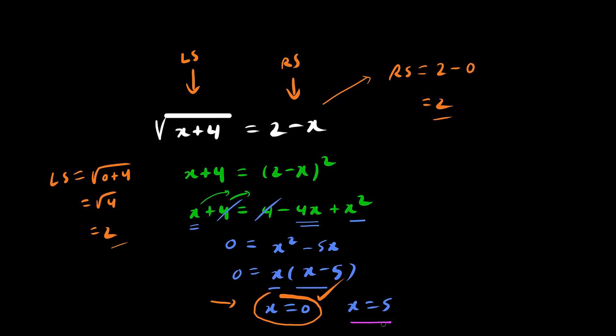Now, suppose x equals 5. Let's verify this is correct. Left side equals the square root of 5 plus 4. This happens to be your x value, which is the square root of 9, which is 3. However, the right side is going to be 2 minus x, 2 minus 5, which is negative 3. Left side does not equal to the right side, so therefore, we reject this extraneous root.